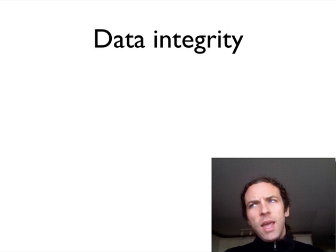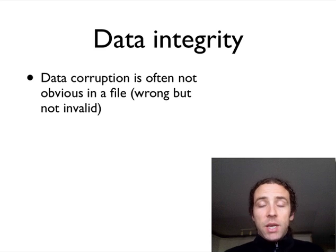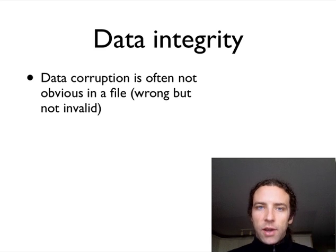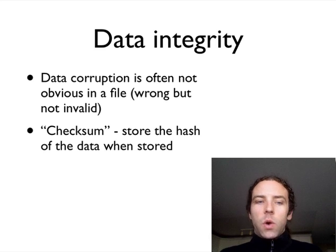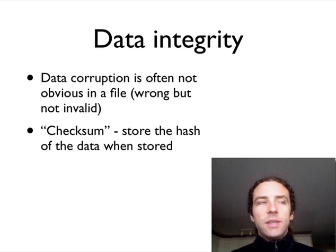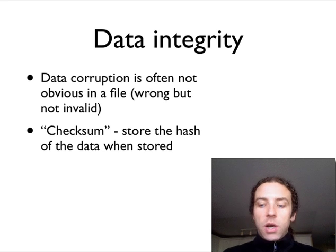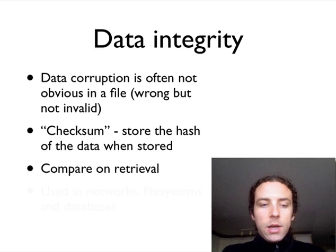Another area where we use this is in data integrity — when you're worried about a file being corrupted. You can't always tell that a file is corrupted; if just the data inside it is corrupted, you'll have no idea if that data is correct or not. Wouldn't it be great if you had some way of validating it? We use something called a checksum. When you save the data, you'll actually store the hash of it — calculate a very simple hash and store that next to the file. That way, if you read the data and the hash code is different, you know the file's been corrupted.